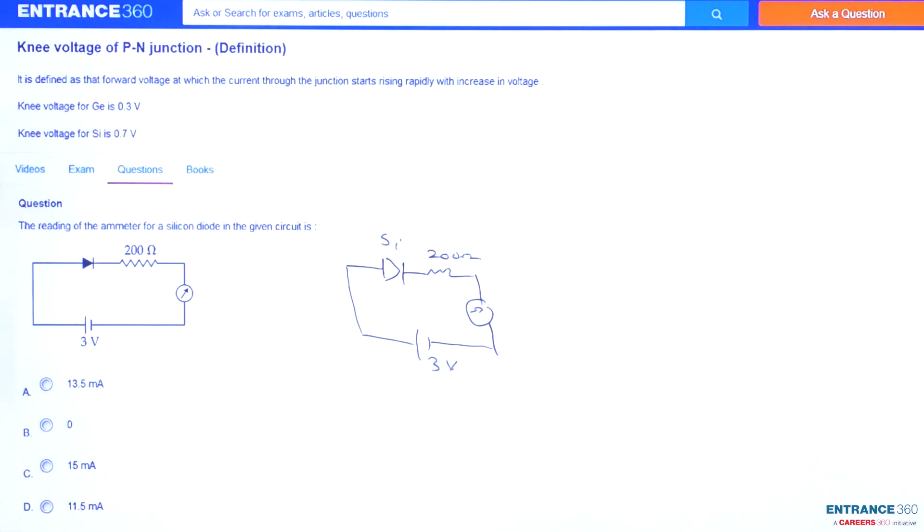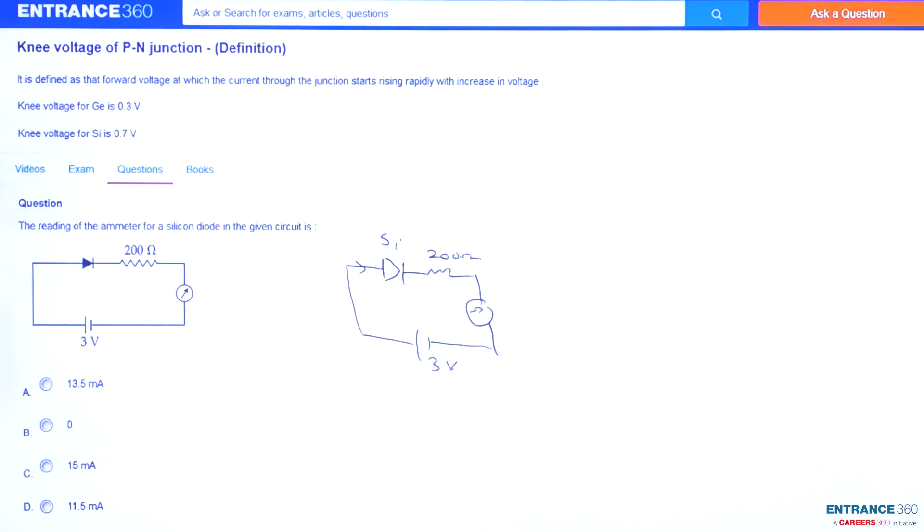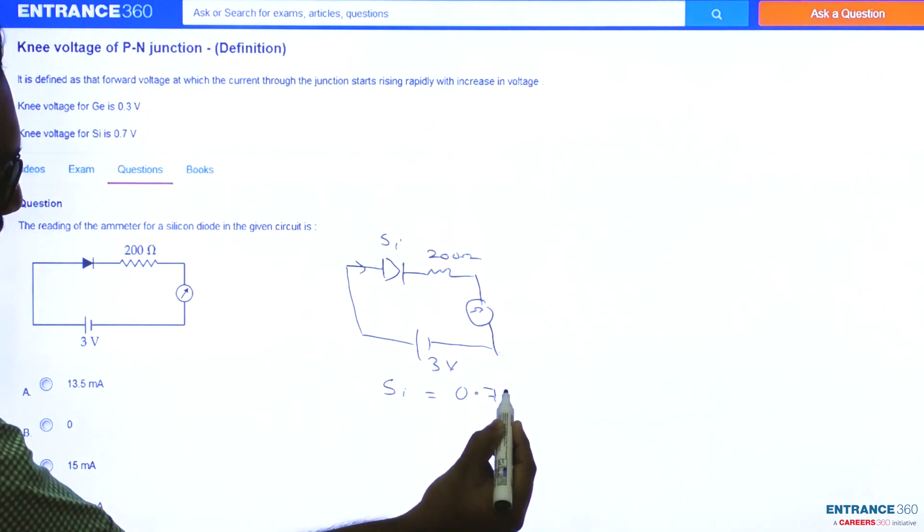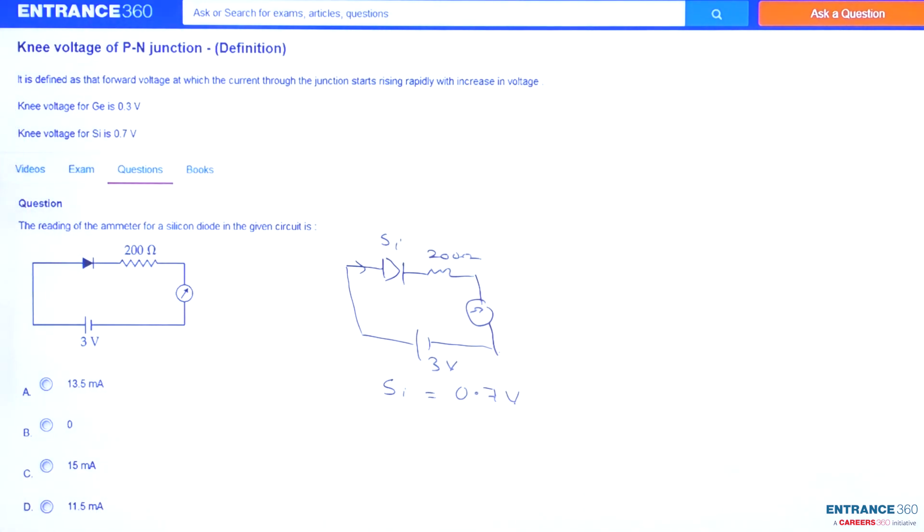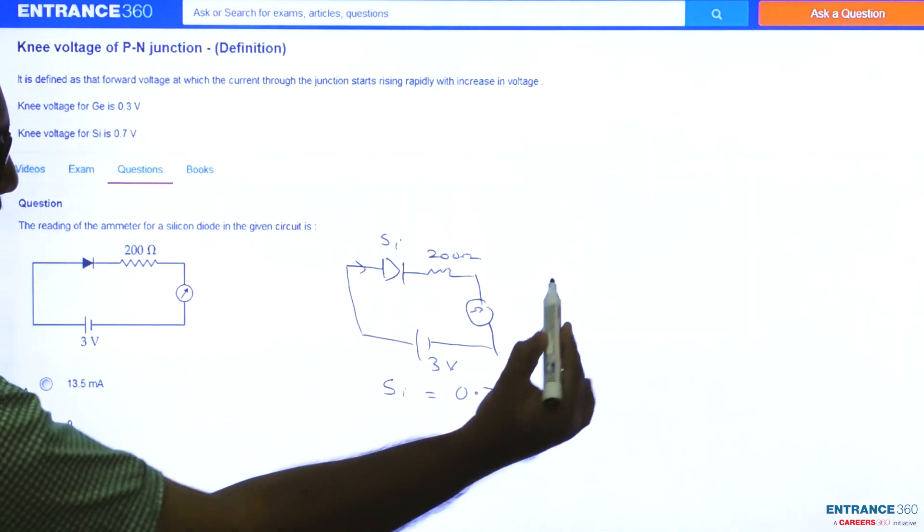Now we have to find out the current through the ammeter. The current through the ammeter will be the current through the circuit. The cutting voltage or threshold voltage of a silicon diode is 0.7 volts. Therefore, now applying Kirchhoff's voltage law in this loop...